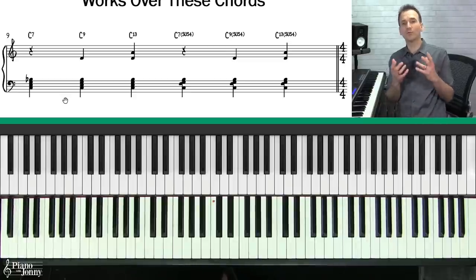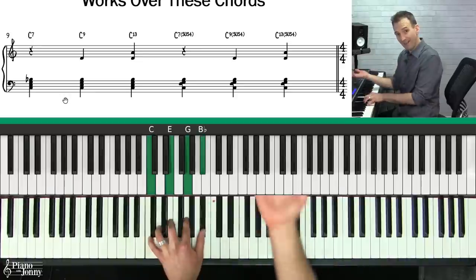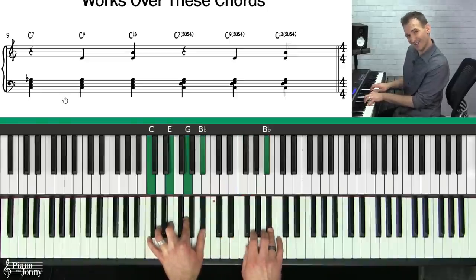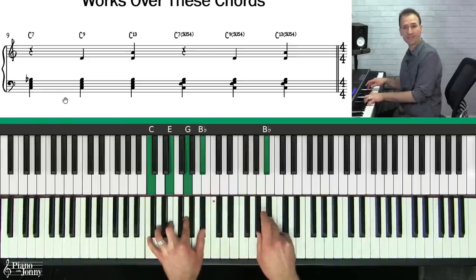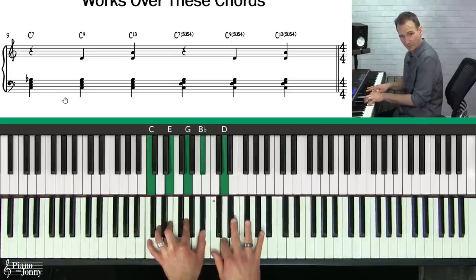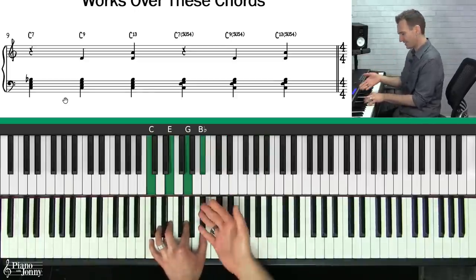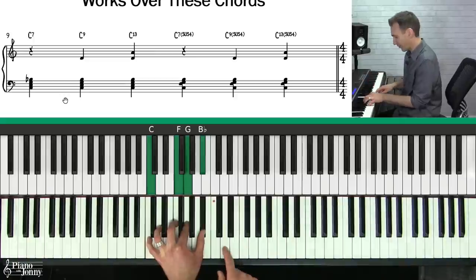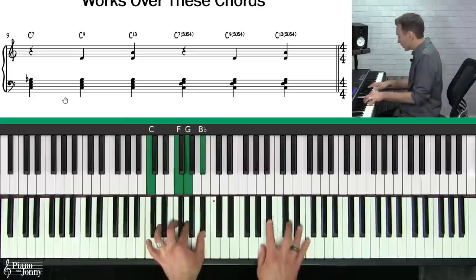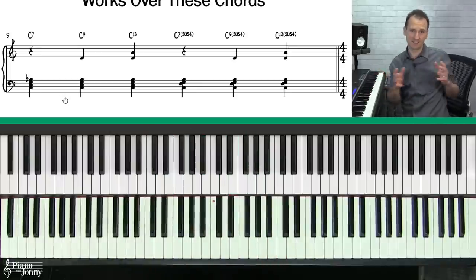This scale tends to work really well on dominant seven chords. If you have a C7 — a chord typically used in the blues or jazz — the C Mixolydian scale works well because it has the B flat. Any type of C7 chord works: C9, C13, or even sus chords like C7 sus4, C9 sus4, or C13 sus4.